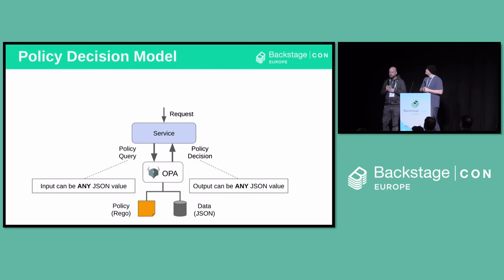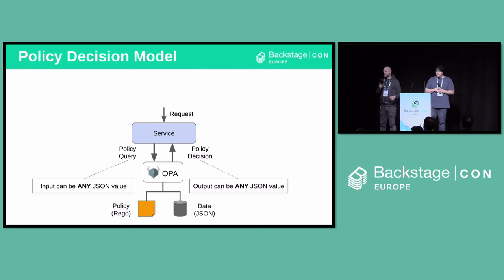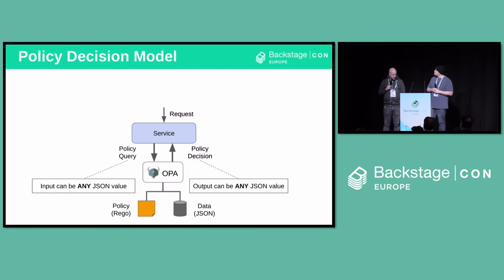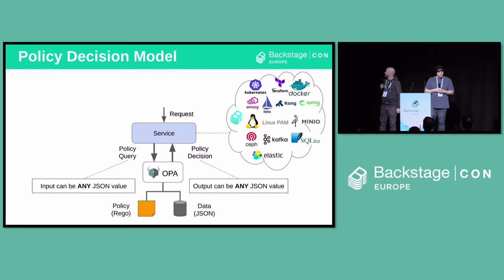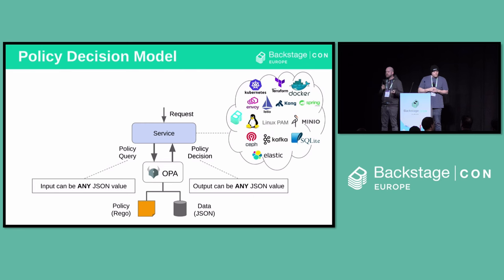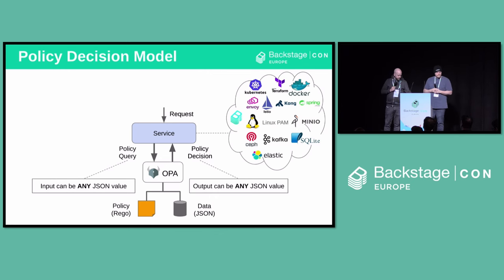How does OPA work across hundreds of integrations? It's a fairly simple model. Anything where we service a request — whether it's the Backstage permission system, a Linux PAM module, or a microservice — rather than figuring out ourselves whether to allow it or not, we delegate that responsibility to OPA via a policy query. We send relevant data like the user identity, the resource being accessed, or the method being used. OPA, based on the policy it has been provided, makes a decision and sends it back.